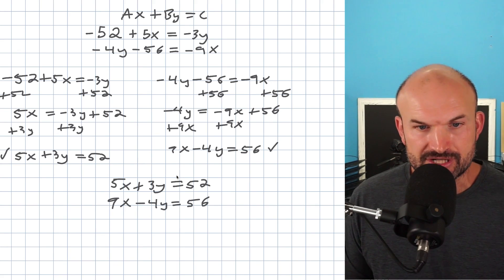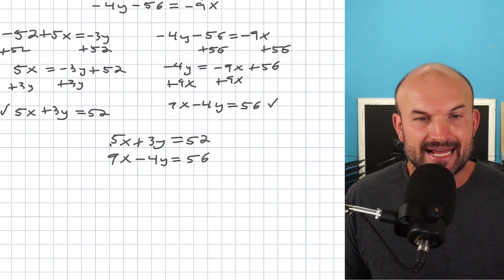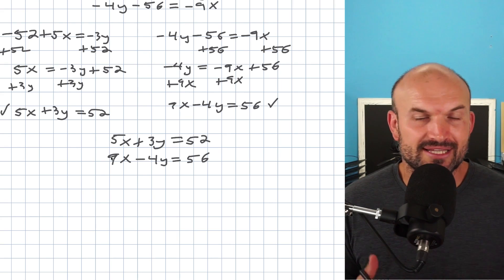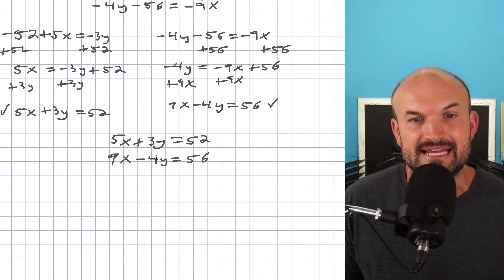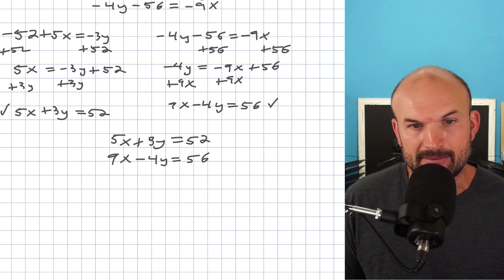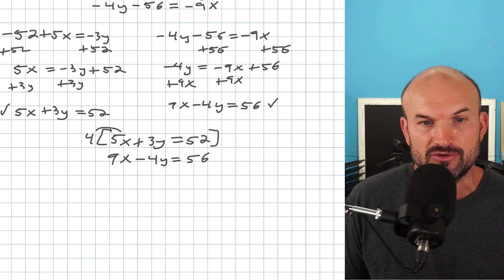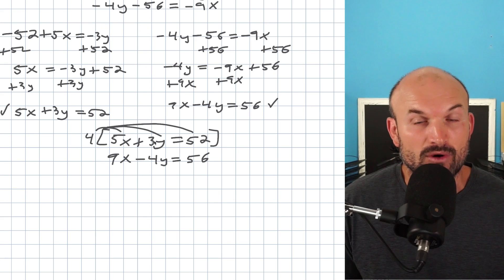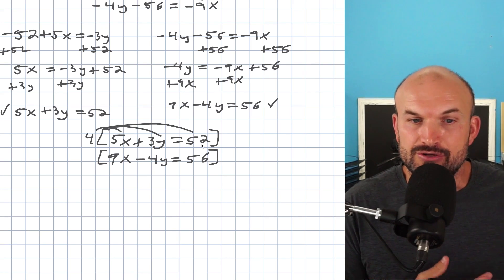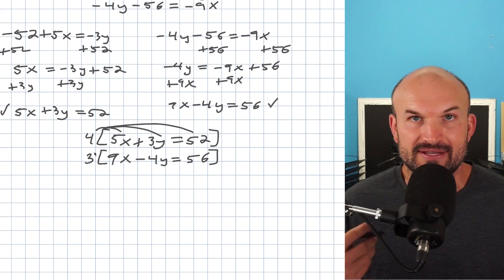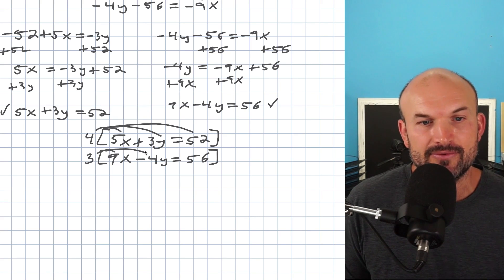Now I have my two equations in standard form, vertically aligned. All variables have coefficients, so I'll use the elimination method. To determine which variable to eliminate, I find the smallest common multiple: 9 and 5 have a common multiple of 45, while 3 and 4 have a common multiple of 12. I'll focus on eliminating y with the coefficient 12. To get 3 to be 12, I multiply by 4 using the distributive property. Since one coefficient is already positive and one negative, both my scalars can be positive and I can just add the equations.